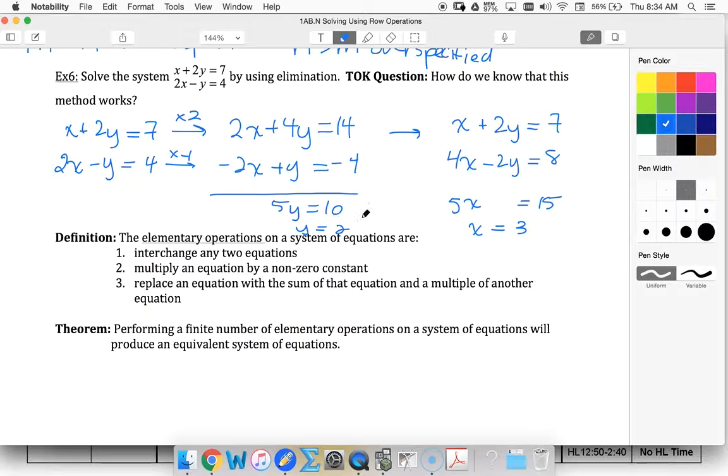And the things that I did to solve this using elimination were what we call elementary operations. So we can interchange any two equations. So I could have written either equation first, multiply by a non-zero constant, replace an equation with the sum of that equation and a multiple of another. So that's what we did here.